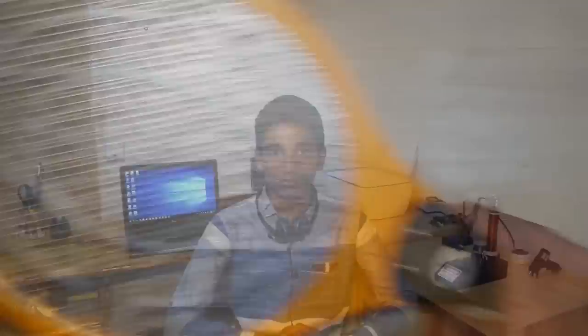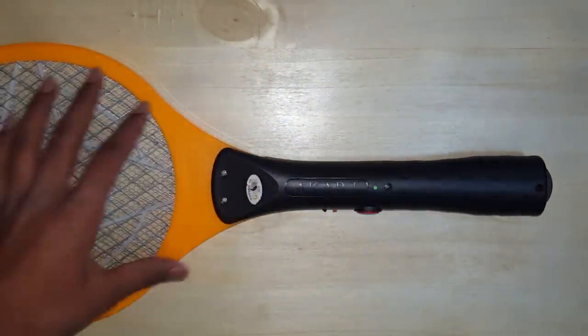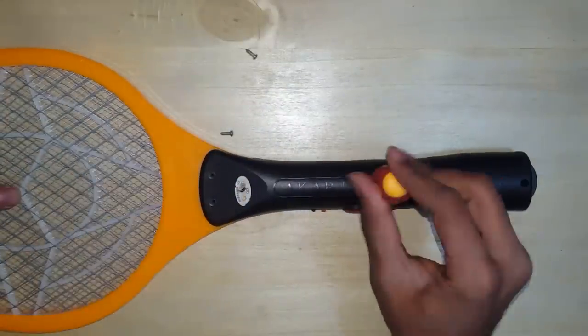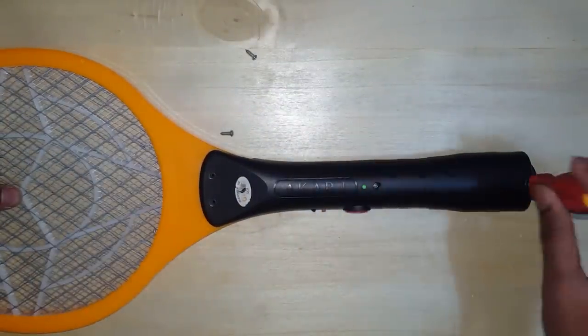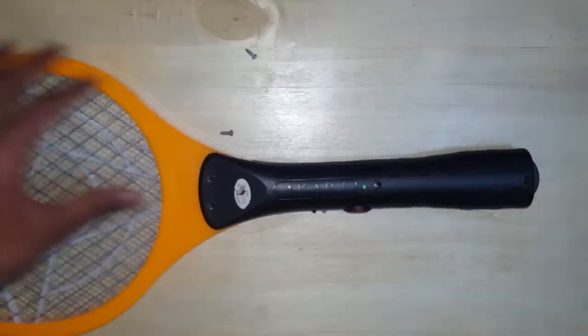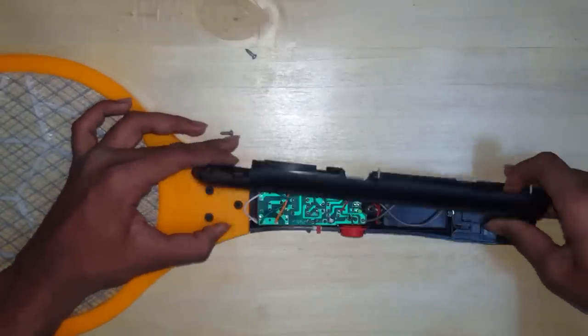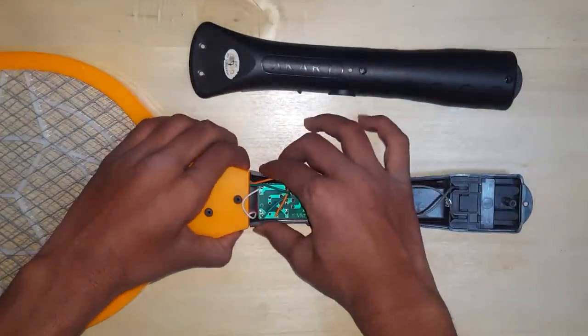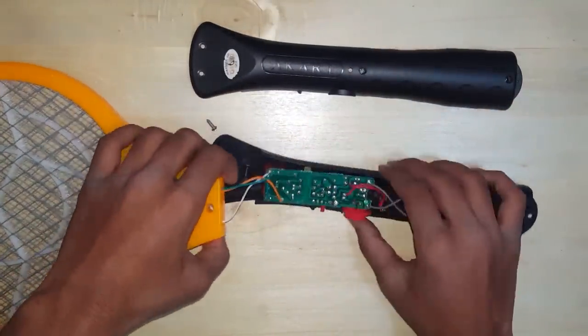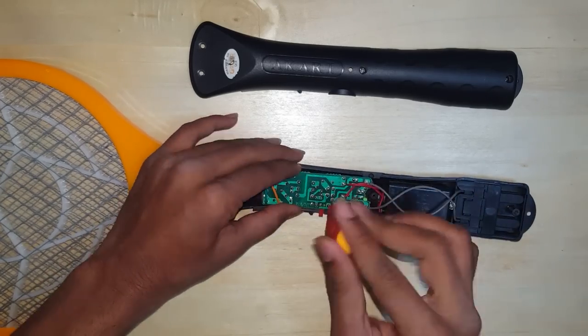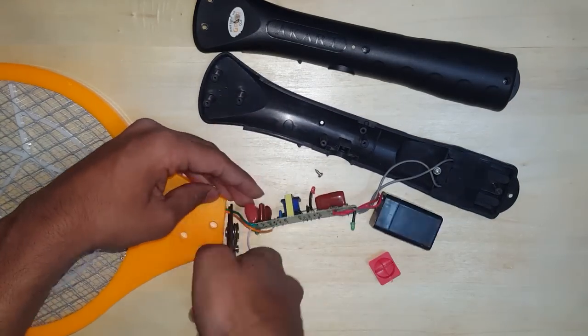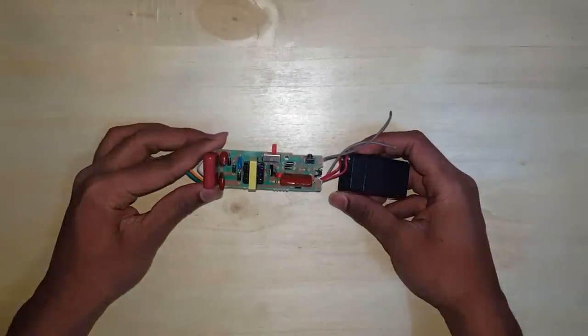So without further ado, let's get into the project. Now you're gonna need an electric fly swatter. Remove all the screws on it, then you're gonna remove the plastic case and you should see the circuit board inside it. Then you're going to unscrew the circuit board and completely remove it out of the case.